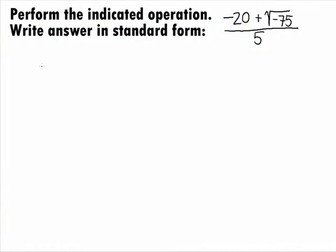In this example, we want to divide the binomial negative 20 plus square root of negative 75 by 5 and write our final answer in standard form.